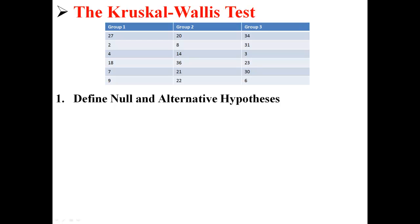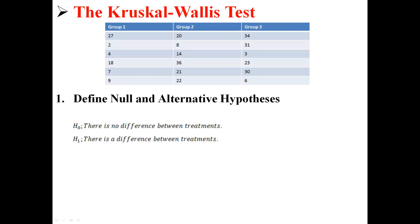Let's start with step 1, defining the null and alternative hypotheses. For a Kruskal-Wallis test, our null hypothesis, H0, is that there is no difference between the treatments that we're comparing. Our alternative hypothesis, H1, is that there is a difference between the treatments that we are comparing.